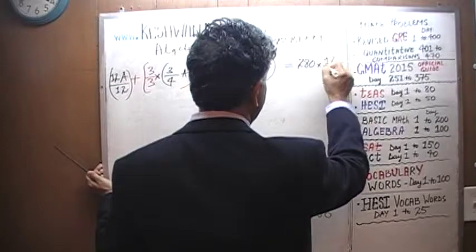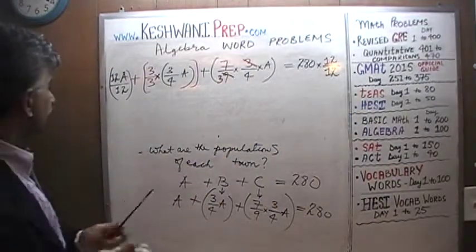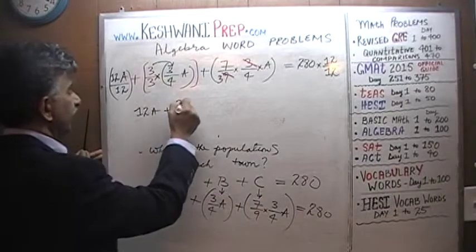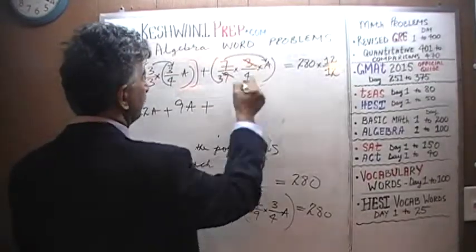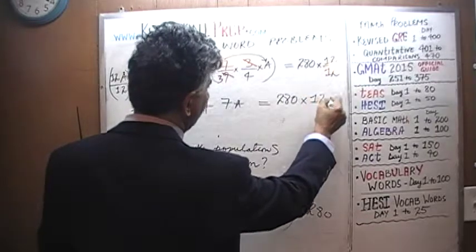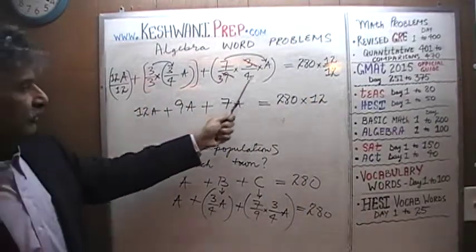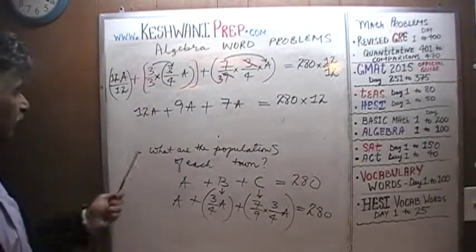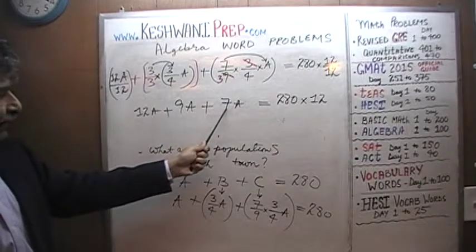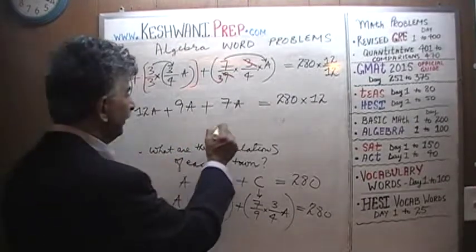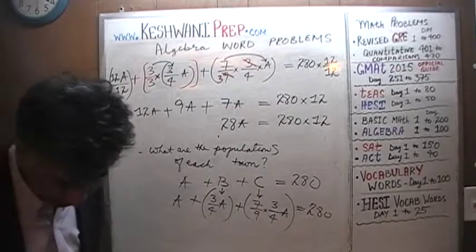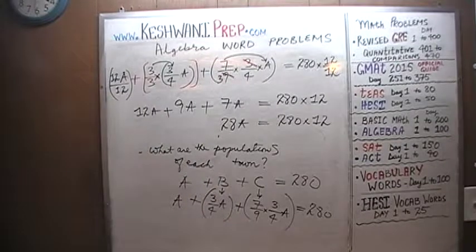Now we have to introduce a twelve over there as well. The rest is very straightforward. So we have twelve A plus three times three which is nine A, plus seven times A which is seven A, and that has to equal 280 times twelve. All terms share the denominator twelve, so we just solve for A. Twelve plus nine is twenty-one, and twenty-one plus seven is twenty-eight — isn't that nice! So it's 28A equals 280 times twelve.